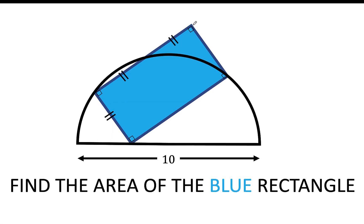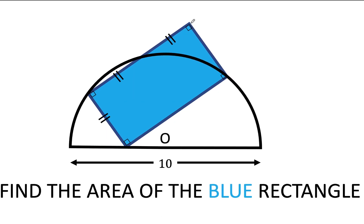Hey everyone, here is our math problem for today. Let's say we are given this semicircle O with a diameter of 10 units and this blue rectangle ABCD that is twice as long as it is tall.